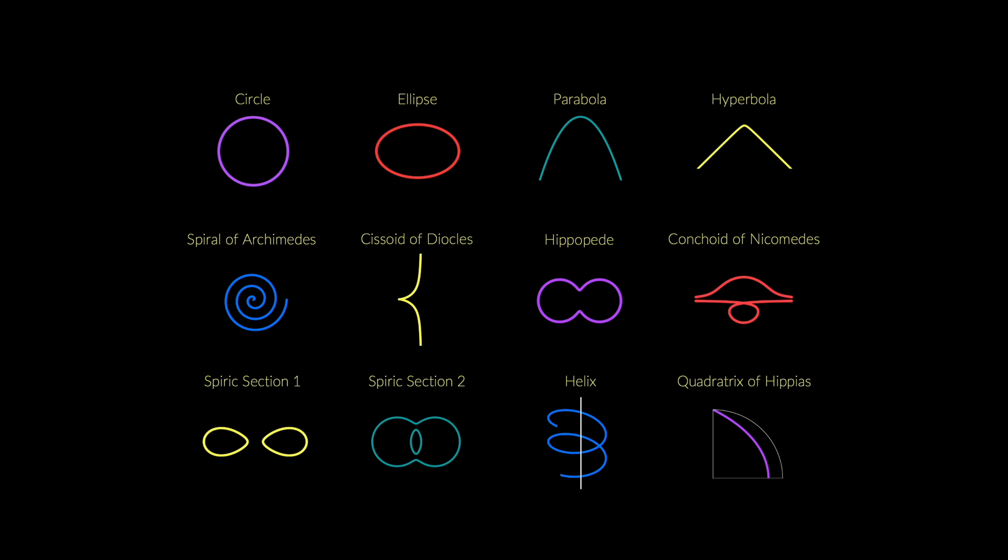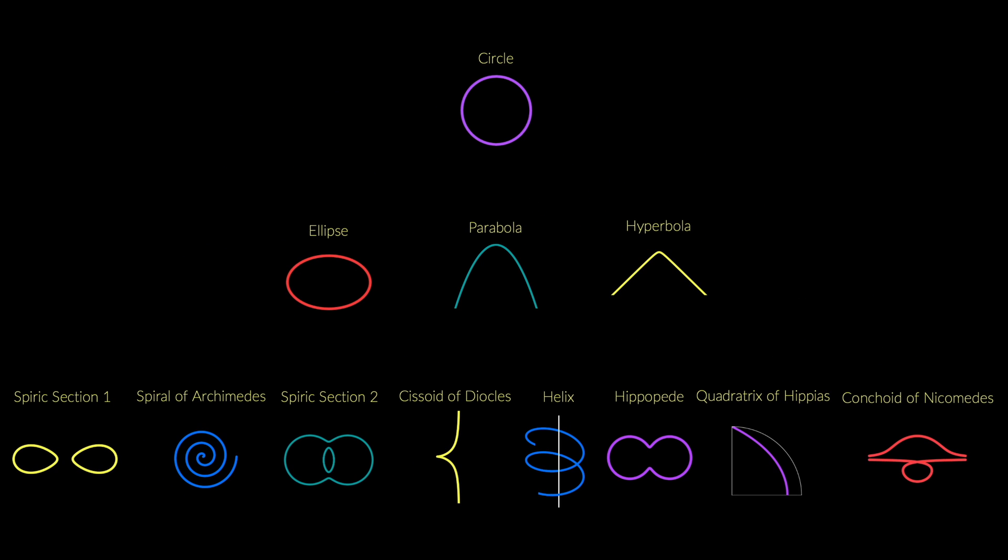The ancient Greeks divided their curves into three ranks based on what they thought of as the naturalness of the curves. The first rank contains the most natural of them all, the circle. The second rank, of medium naturalness, contains the ellipse, parabola, and hyperbola. The third rank, the least natural, contains all the other curves.